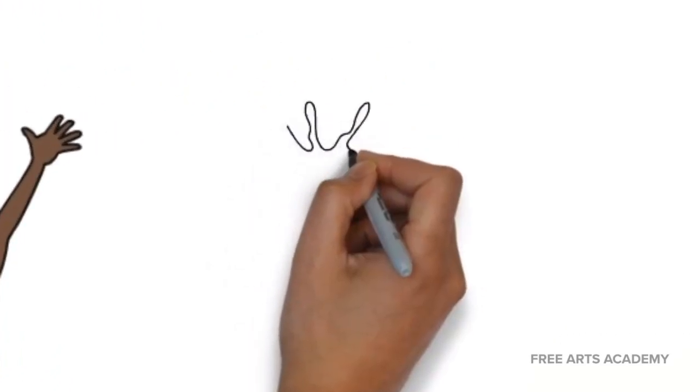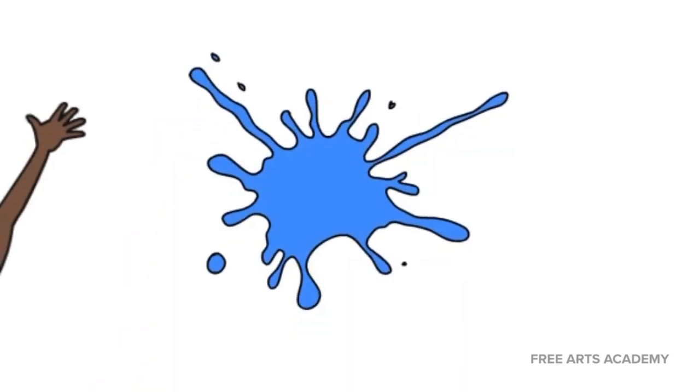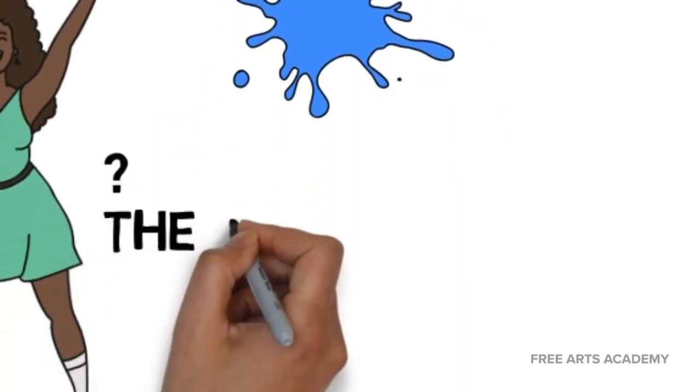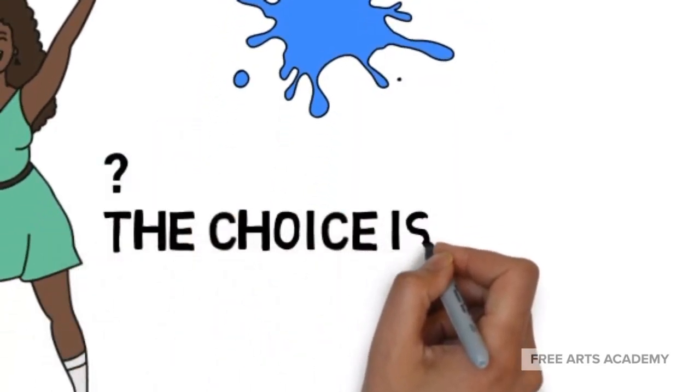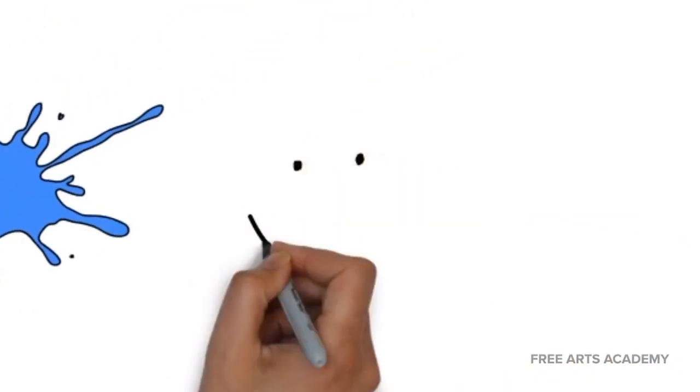Will it be acrylic paint and a canvas? Clay and an oven? Stone and a chisel? These are just a small sample of materials you may need. We will continue to have links and talk about the materials we use at Free Arts Academy so you know what you need.